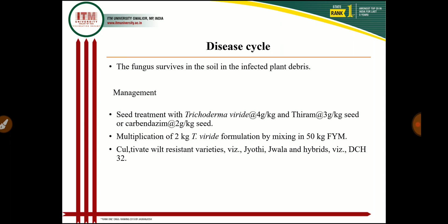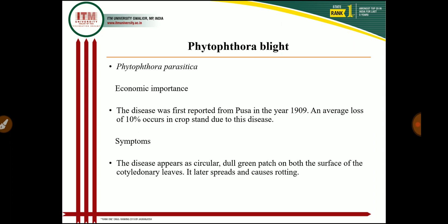The next disease is phytophthora blight, caused by Phytophthora parasitica. Phytophthora is a most important pathogen for vegetable crops as well as oil seed crops. This disease was first reported from Pusa in 1909, and average losses of 10 percent occur in the crop. If a very severe condition of phytophthora pathogen occurs in the castor crop, 10 to 15 percent yield losses result.